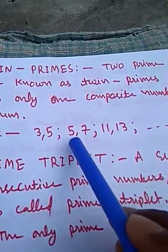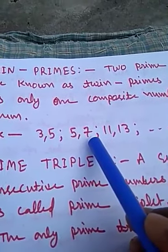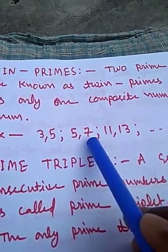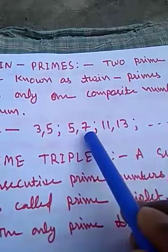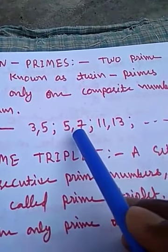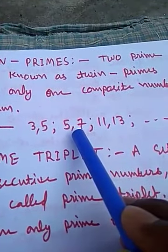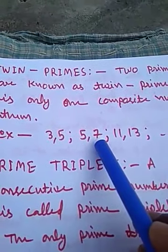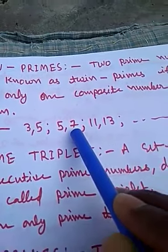Here 5 and 7 are both prime numbers. There is only one composite number between them, which is 6. So 5 and 7 are called twin primes.